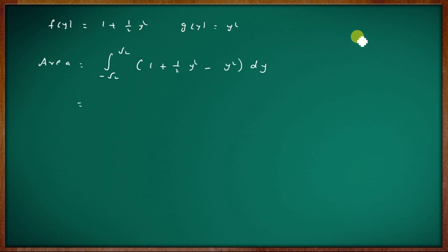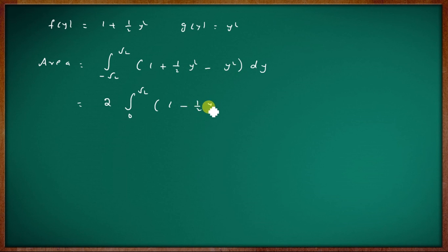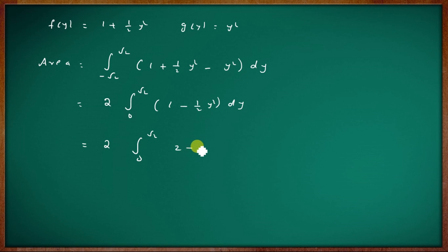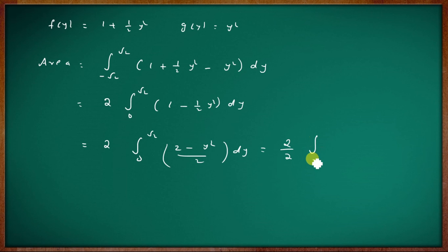Simplifying: 2 × ½ × ∫₀^√₂ (2 − y²) dy. Evaluating: ∫₀^√₂ (2 − y²) dy.